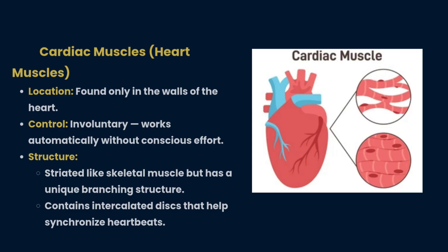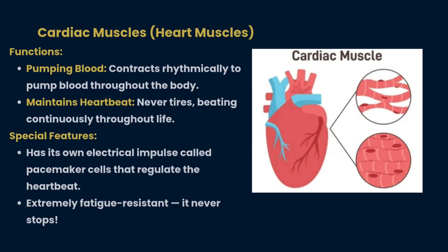The second type is cardiac muscle, otherwise called heart muscle. It is found in the walls of the heart and works automatically without conscious effort. Structurally, it is striated like skeletal muscle but has a unique branching structure, and it contains intercalated discs that help synchronize heartbeats.